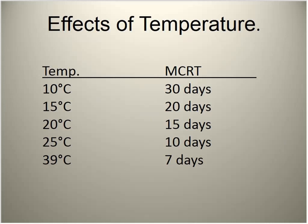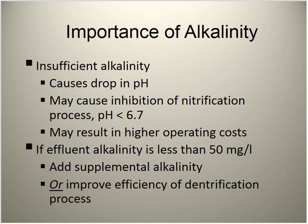At 10°C, developing the proper organisms to nitrify could take about 30 days MCRT. Facilities that don't maintain nitrification through winter will start adjusting their process in March to be ready for April limits — it takes 15–20 days to get started. Alkalinity is a critical parameter that often gets overlooked. A drop in pH below 6.7 will start to inhibit the process, so at least 50 mg/L of alkalinity must remain at the end of the reactor.